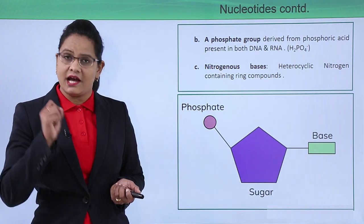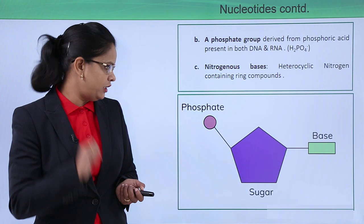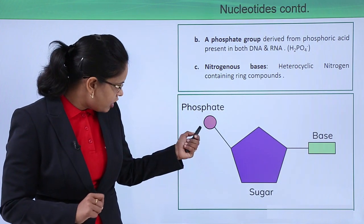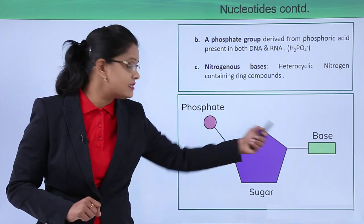So now we are in a state to define the structure of a nucleotide. This is how a nucleotide assembles together to form a polynucleotide: here is a phosphate group, this is a sugar, and this is a base.